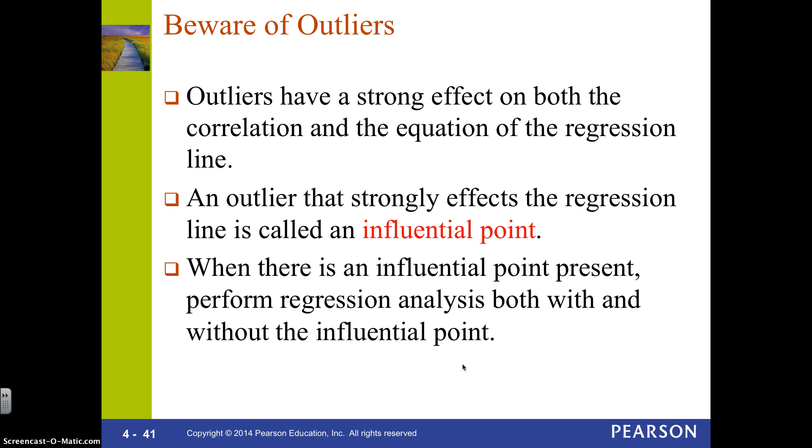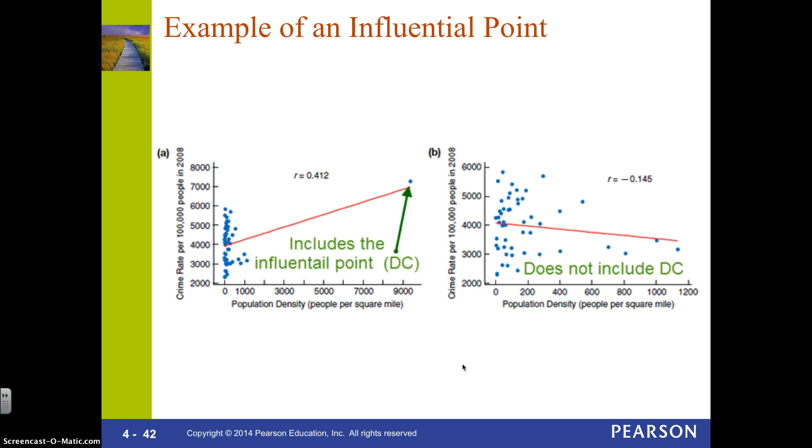And I'll show you in a second, we can actually move a point around and see how the line changes just by moving one point. So here's an example where you have this influential point. This is the population density of all the states, including Washington D.C., and the crime rate per 100,000 people in the U.S.